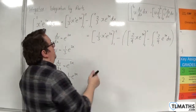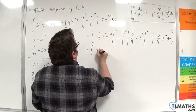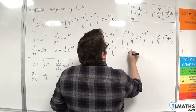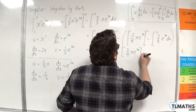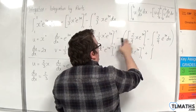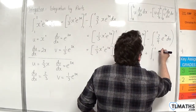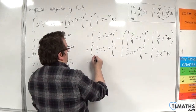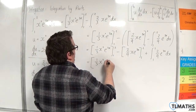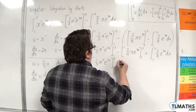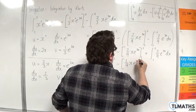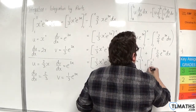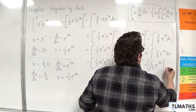Now let's deal with the bracket first. We've got 1 third x squared e to the 3x evaluated between 1 and 2, take away 2 ninths x e to the 3x evaluated between 1 and 2, and then plus the integral between 1 and 2 of 2 ninths e to the 3x dx. This last part integrates to 2 over 27 e to the 3x, evaluated between 1 and 2.